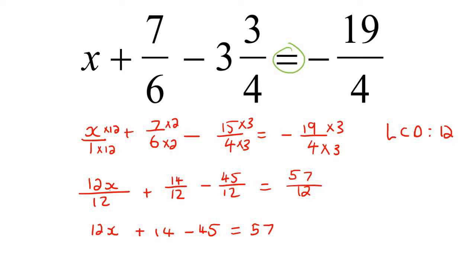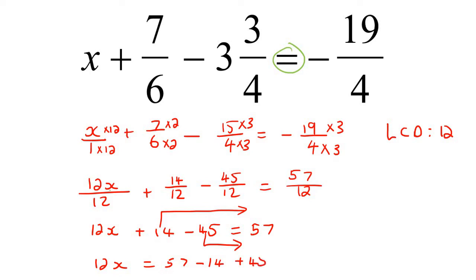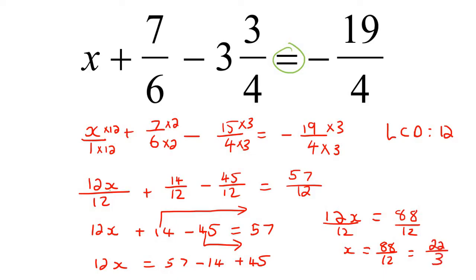Now we are at the very basic stuff from previous lessons, where you just have normal variables and numbers. You take the variables to one side and the numbers to the other side. So we take 14 and minus 45 to the right-hand side, giving 12x equals 57 minus 14 plus 45, which gives us 88. Then we divide both sides by 12, so x equals 88 over 12, which simplifies to 22 over 3.